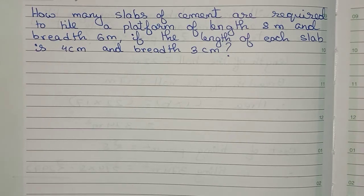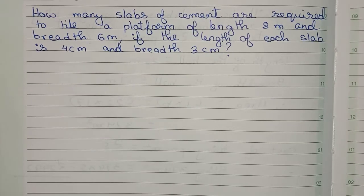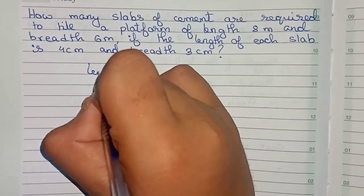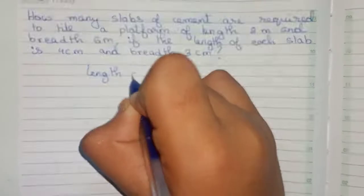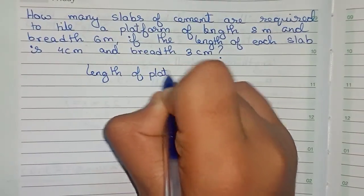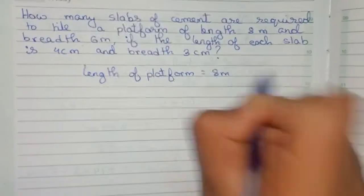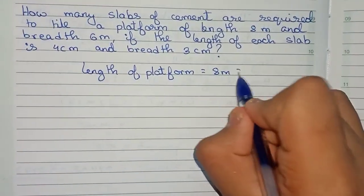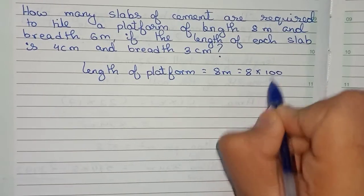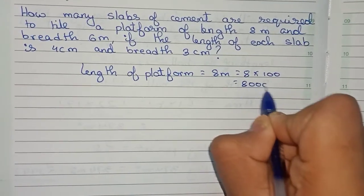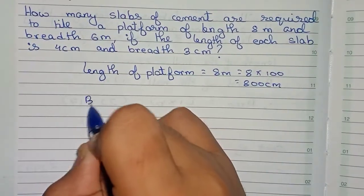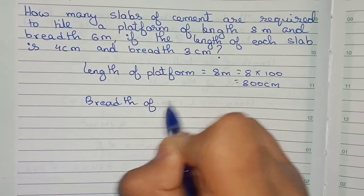So this is our question. Now I'll solve this. First, you have the length of the platform, which is equal to 8 meters. Convert it into centimeters first, so it will be 8 × 100, which equals 800 centimeters.